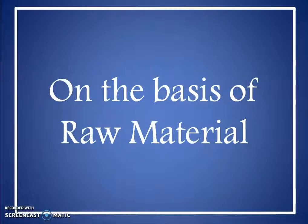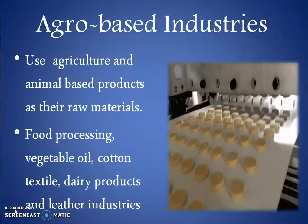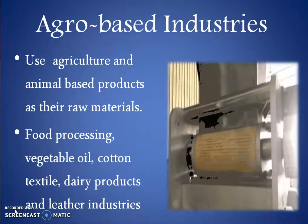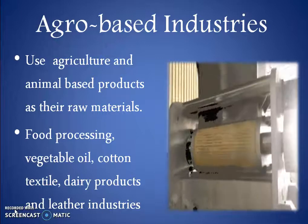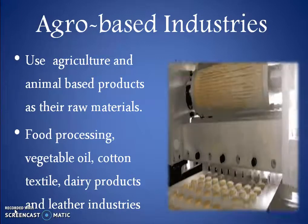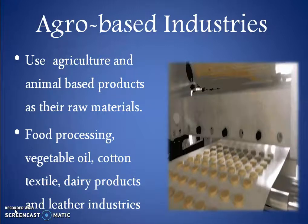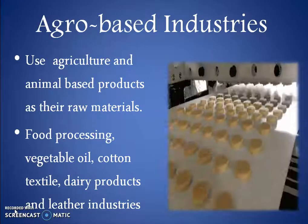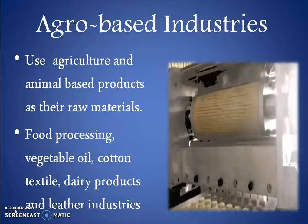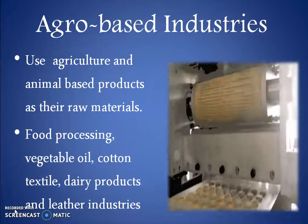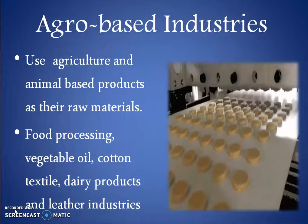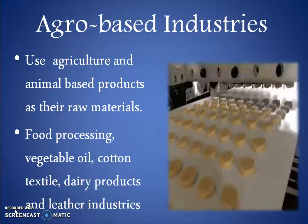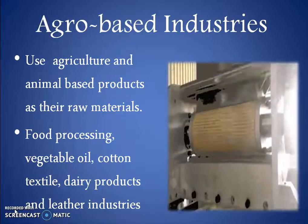On the basis of raw material, industries can be classified as: First, agro-based industry. Such type of industries use agriculture and animal-based products as their raw material. For example, food processing, vegetable oil, cotton textile, dairy products, and leather industries.